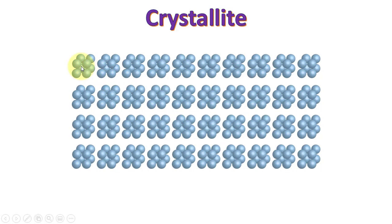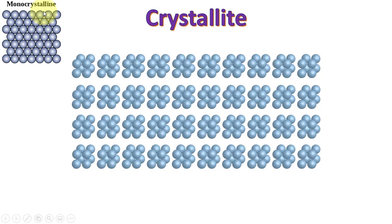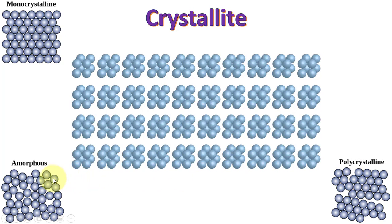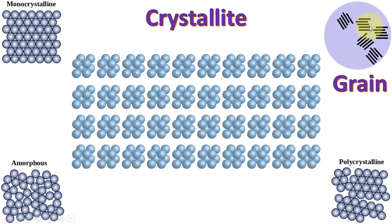Sometimes these crystallites are in a single pattern and we call it monocrystalline. In some situations they are in different patterns and we call it polycrystalline. In some cases we don't have a long range order and it is then termed amorphous.